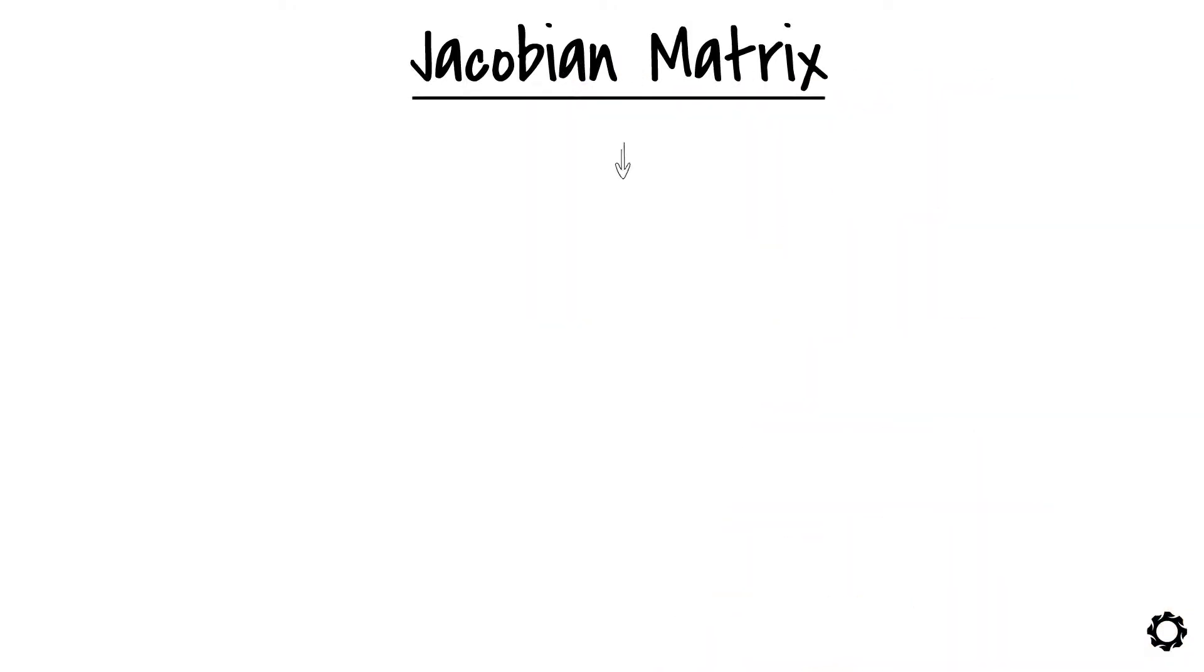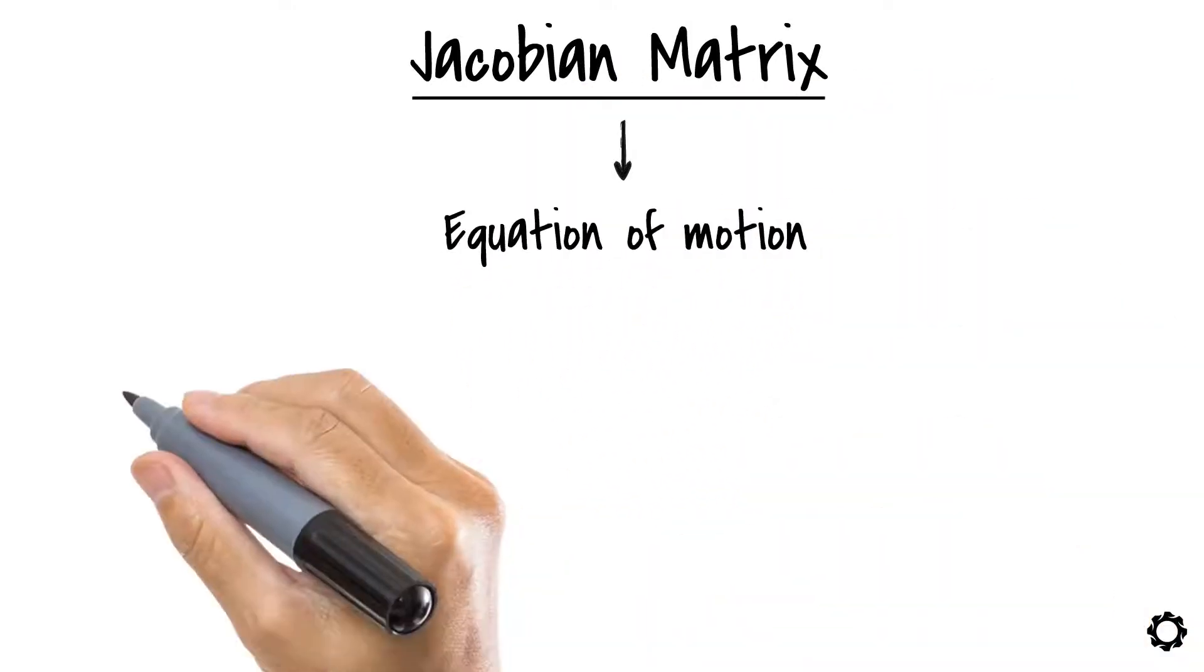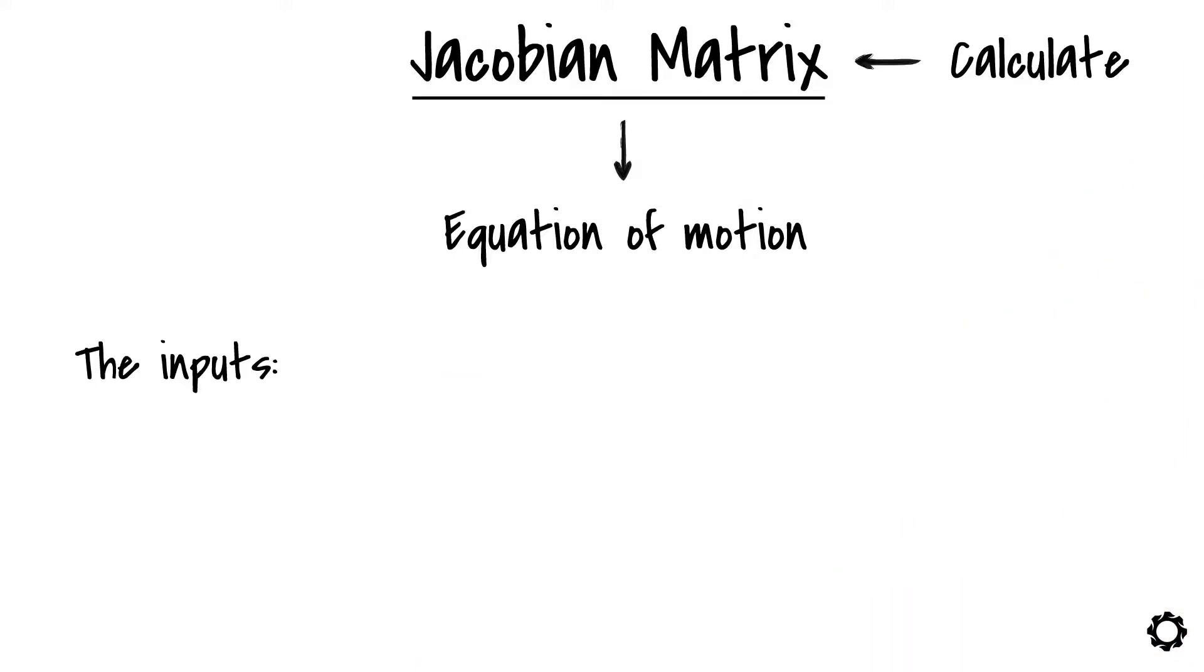This matrix is the one we will use in our equation of motion. The inputs needed to calculate the Jacobian matrix of our system are the constraint equations, which we know how to calculate, and the set of generalized coordinates from our system.